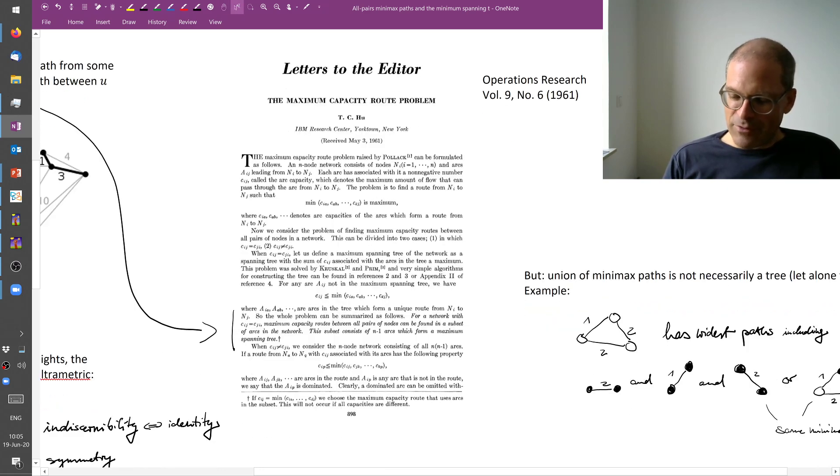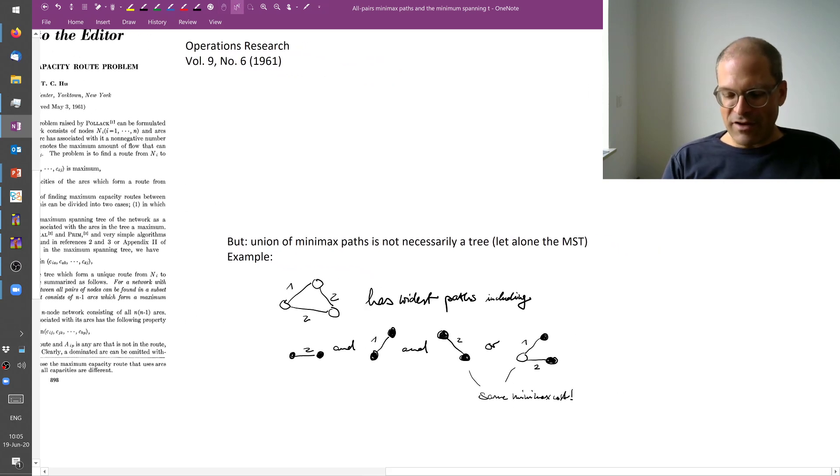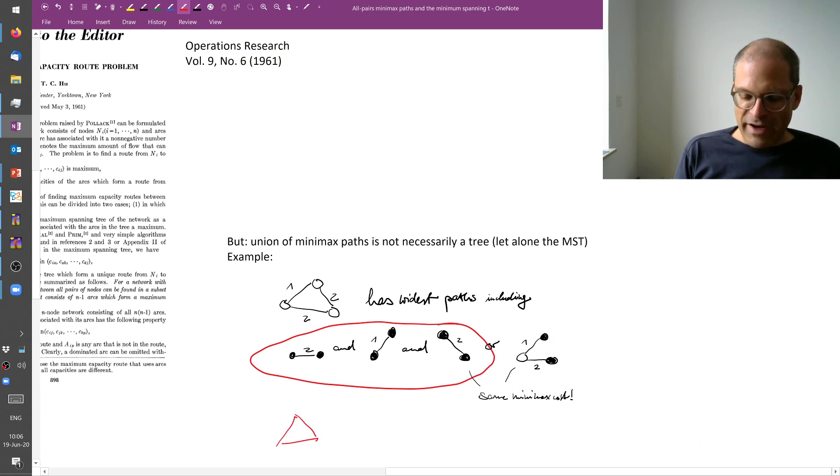Now I mentioned a little bit this degeneracy here. So if you consider this example here on the right hand side, if I take a union of minimax path, I need not get out the tree necessarily. So I can get a graph with loops. So for example, if I'm looking at these two nodes here, well, the minimax, one minimax path would be this one. But another minimax path actually would go around the top node. So here I have a few minimax paths and if I take these three together, then these will be the three sides of the triangle. So this will be a loopy graph, not a tree and hence also not a minimum spanning tree.